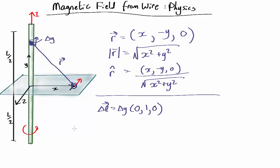So now we can plug into the Biot-Savart law and we find that the little bit of magnetic field caused by that little bit, so this is the delta B.